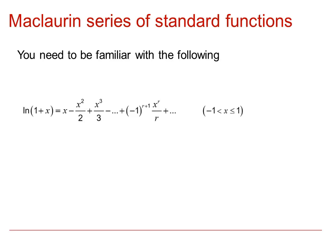ln(1 plus x) is x minus x squared over 2 plus x cubed over 3 with a general term minus 1 to the r plus 1 times x to the r over r, and that is valid for x between minus 1 and up to and including 1.